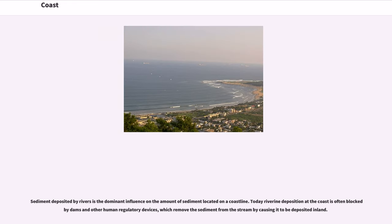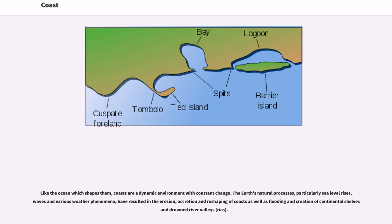Sediment deposited by rivers is the dominant influence on the amount of sediment located on a coastline. Today riverine deposition at the coast is often blocked by dams and other human regulatory devices, which remove the sediment from the stream by causing it to be deposited inland. Like the ocean which shapes them, coasts are a dynamic environment with constant change. The Earth's natural processes, particularly sea level rises, waves and various weather phenomena, have resulted in the erosion, accretion and reshaping of coasts as well as flooding and creation of continental shelves and drowned river valleys.